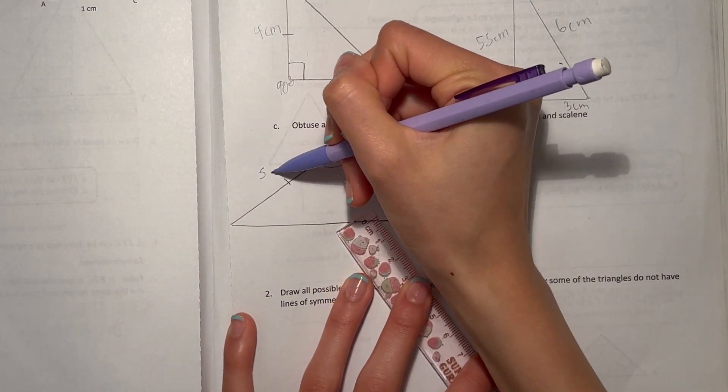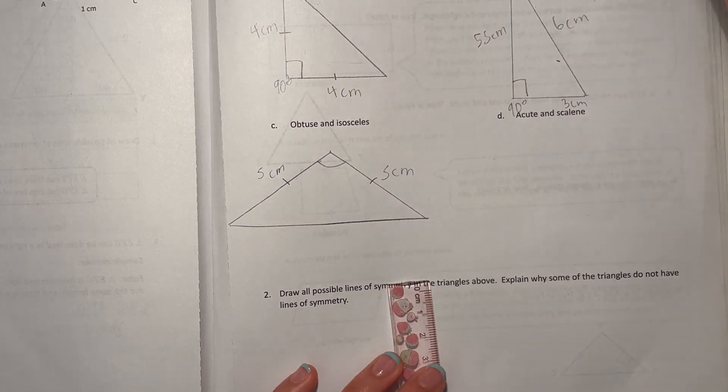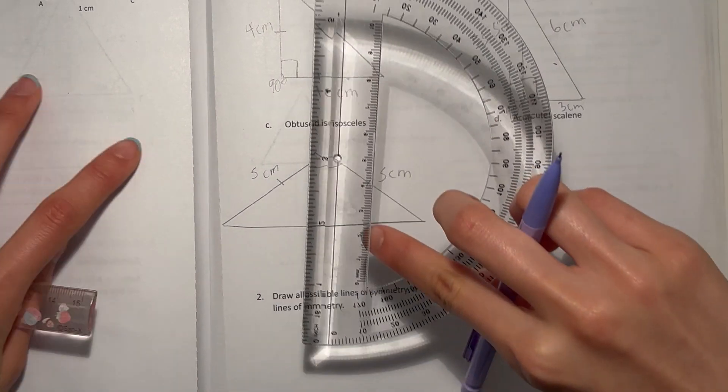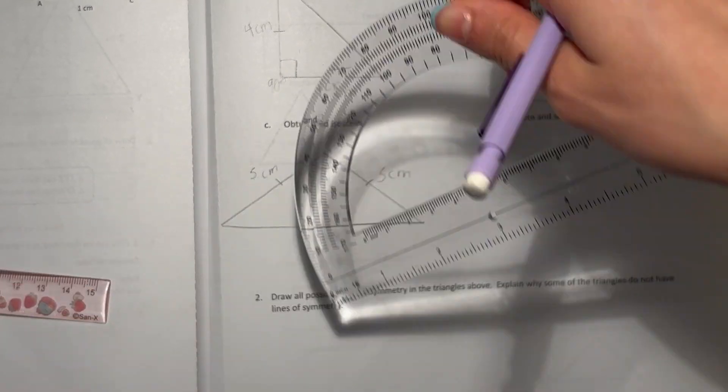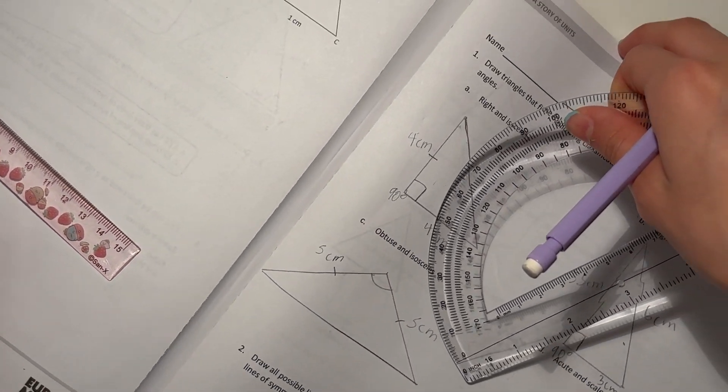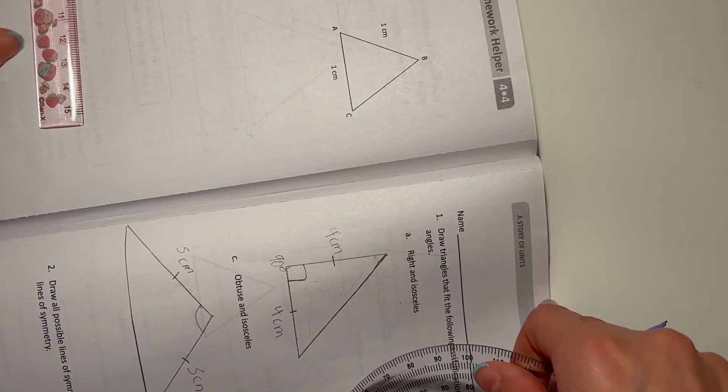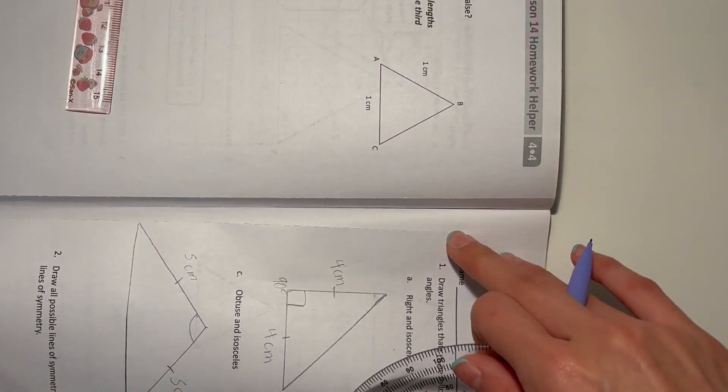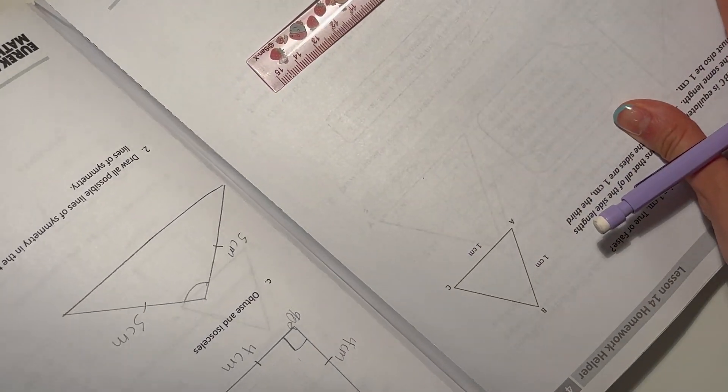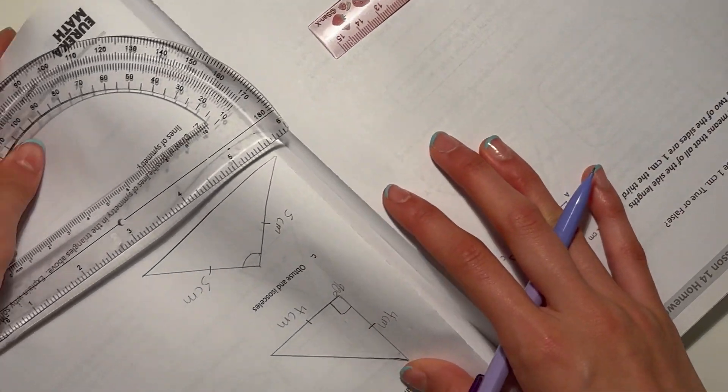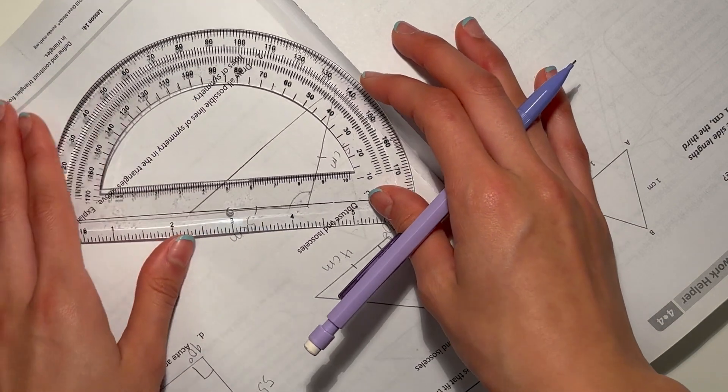So these two side lengths would be the same. We know that's five centimeters, five centimeters. And here we want to try and use our protractor. Okay, I kind of like to have my base like flat, so I'm gonna kind of just turn this.